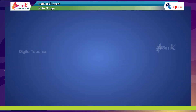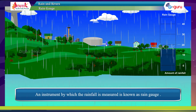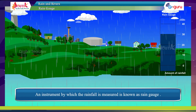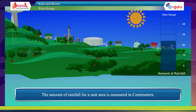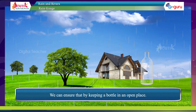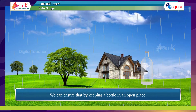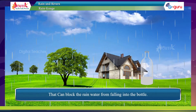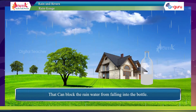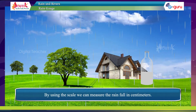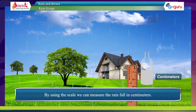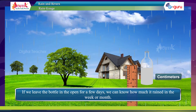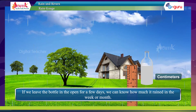Rain gauge: an instrument by which rainfall is measured is known as a rain gauge. The amount of rainfall for a unit area is measured in centimeters. We can make a simple rain gauge by keeping a bottle in an open place, ensuring no walls or trees block the rain water. Using a scale, we can measure the rainfall in centimeters. If we leave the bottle in the open for a few days, we can know how much it rained in that week or month.